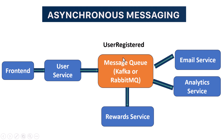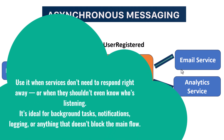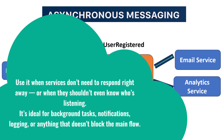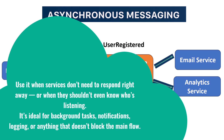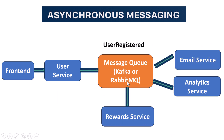So when should you go asynchronous? Use it when services don't need to respond right away, or when they shouldn't even know who's listening. It's ideal for background tasks, notifications, logging, or anything that doesn't block the main flow. This model keeps services loosely connected. If the email service is down, the user can still sign up — the message will be picked up later when the service comes back online.